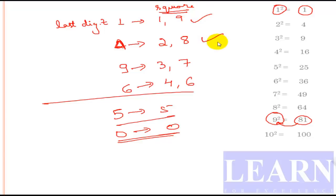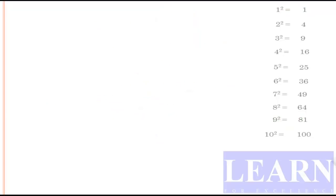Now how to handle the confusion when the last digit is 1 or 9 — for example whether the number is 21 squared or 29 squared. There is one short trick for this. Understand the trick by watching the video till the end and you can solve any square root within just two seconds.